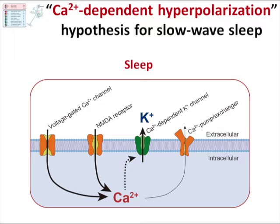Effectively, this means that an inflow of calcium ions into the neuron triggers the protein that pumps potassium ions out, causing the neurons to become strongly polarized — the state seen in slow-wave sleep.